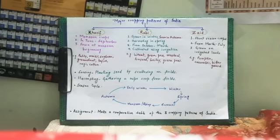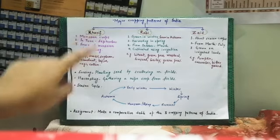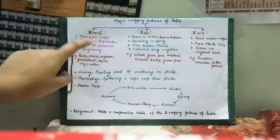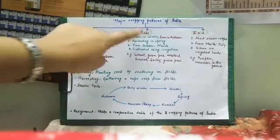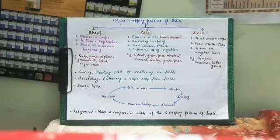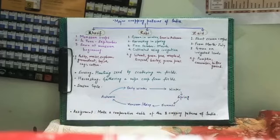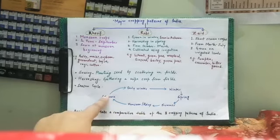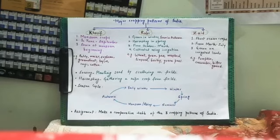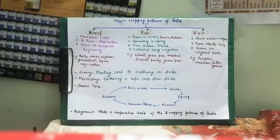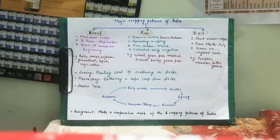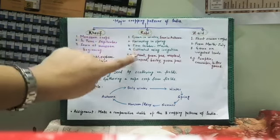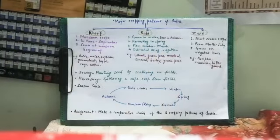The second cropping pattern is Rabi crops, grown in winter and sown in autumn — from October to March. When Kharif crops are harvested, Rabi crops are sown. Examples of Rabi crops are wheat, gram, pea, mustard, linseed, barley, and green peas. Kharif crops get water naturally from the monsoon, but Rabi crops need irrigation because natural water is not available in winter.